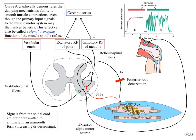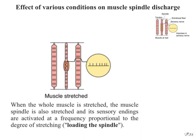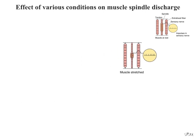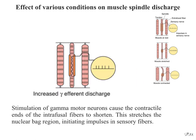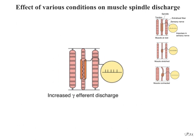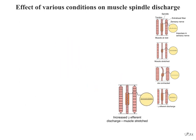Regarding the effect of various conditions on muscle spindle discharge: when the whole muscle is stretched, the muscle spindle is also stretched and its sensory endings are activated at a frequency proportional to the degree of stretching — this is called loading the spindle. Spindle afferents stop firing when the muscle contracts, which is called unloading the spindle. Stimulation of gamma motor neurons causes the contractile ends of the intrafusal fibers to shorten, stretching the nuclear bag region and initiating impulses in sensory fibers. If the whole muscle is stretched during stimulation of the gamma motor neurons, the rate of discharge in sensory fibers is further increased.